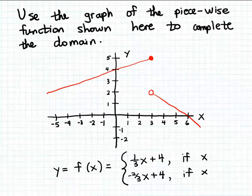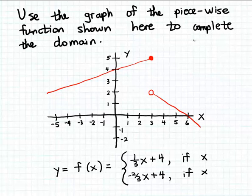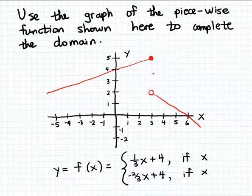In this example we're given the graph of a piecewise function named f, and we're asked to complete the formula for this piecewise function by completing the domain indicated in the formula. The function is called a piecewise function because the graph consists of two distinct pieces, both of which are lines. This makes it a piecewise linear function, though in general a piecewise function can consist of pieces of several different types of curves — they don't always have to be straight lines.